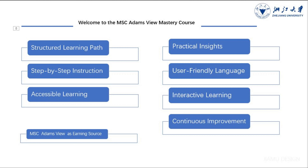Structured Learning Path: The course follows a carefully structured learning path, starting with the basics and gradually progressing to more advanced topics. Each lesson builds upon the previous one, ensuring a smooth learning experience. Step-by-step instruction: Lessons are presented in a step-by-step format, making it easy for learners to follow along and understand each concept thoroughly. This approach is ideal for individuals who are new to simulation software.